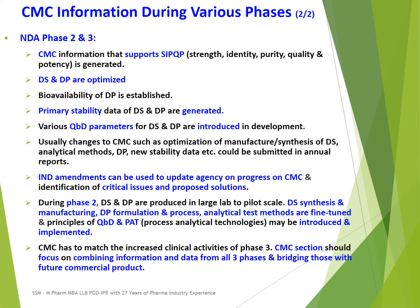During NDA Phases 2 and 3, CMC information that supports strength, identity, purity, quality, and potency is generated. Drug substance and drug products are optimized. Bioavailability of drug product is established and primary stability data are generated. Various quality by design parameters are introduced in development. Changes to CMC such as optimization of drug substance synthesis, analytical methods, drug product, and new stability data should be submitted in annual reports. IND amendments can be used to update the agency on CMC progress and identification of critical issues and proposed solutions.